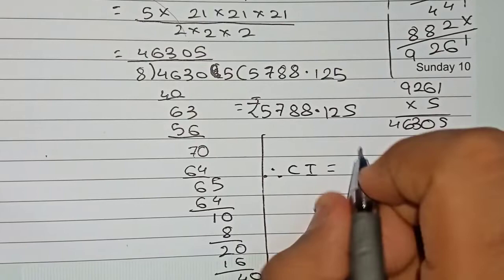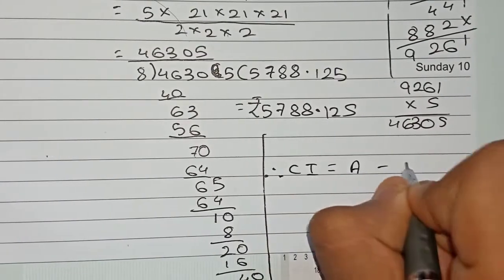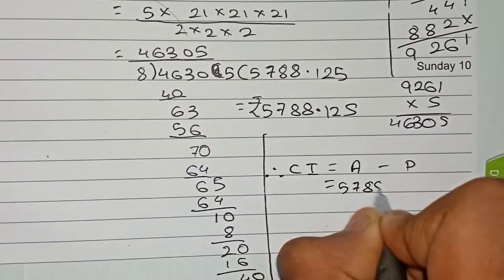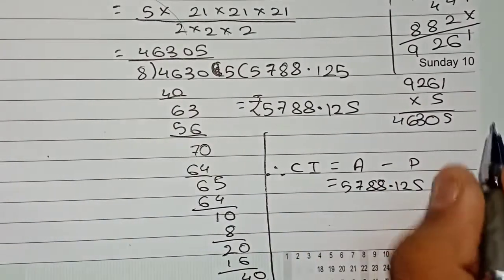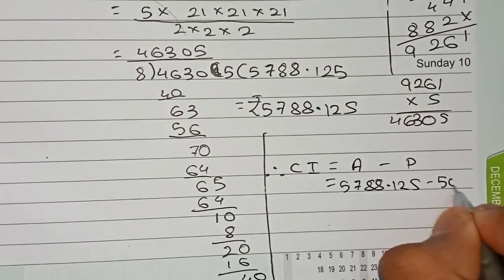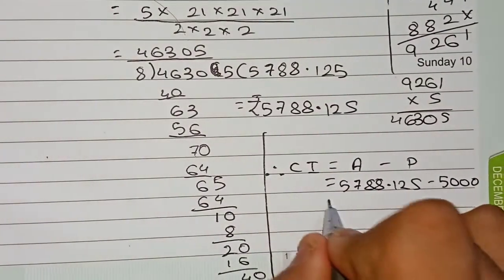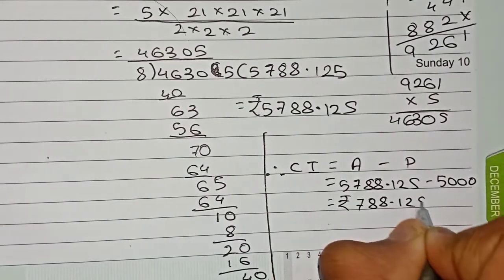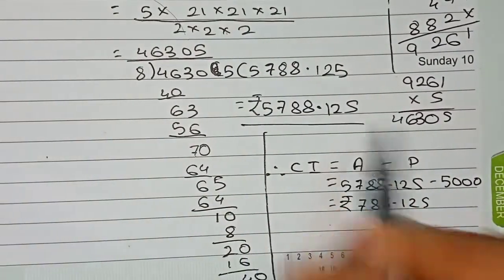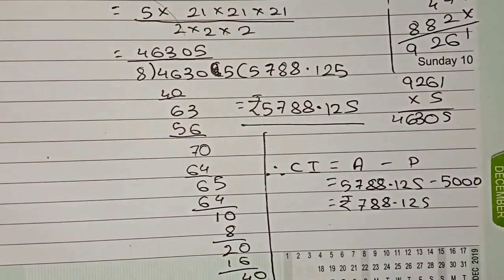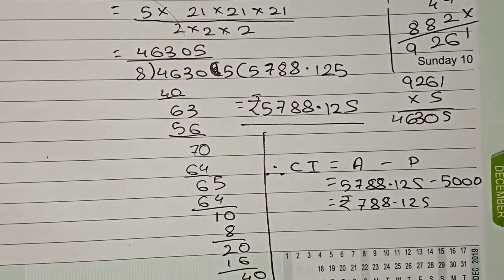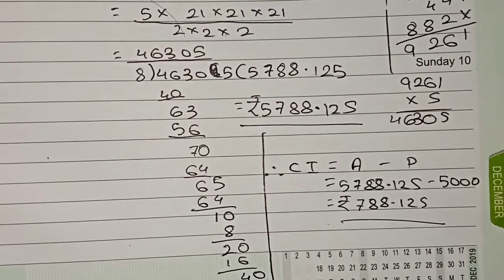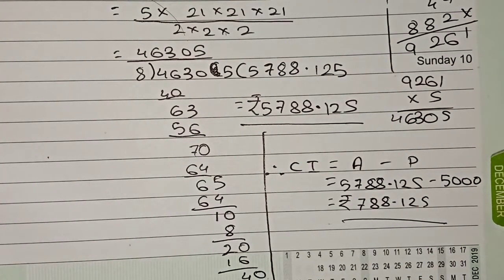Now we find the compound interest. CI = Amount − Principal = 5788.125 − 5000 = rupees 788.125. So the final answers are: Amount = ₹5788.125 and Compound Interest = ₹788.125. Thanks for watching, please subscribe for more solutions.